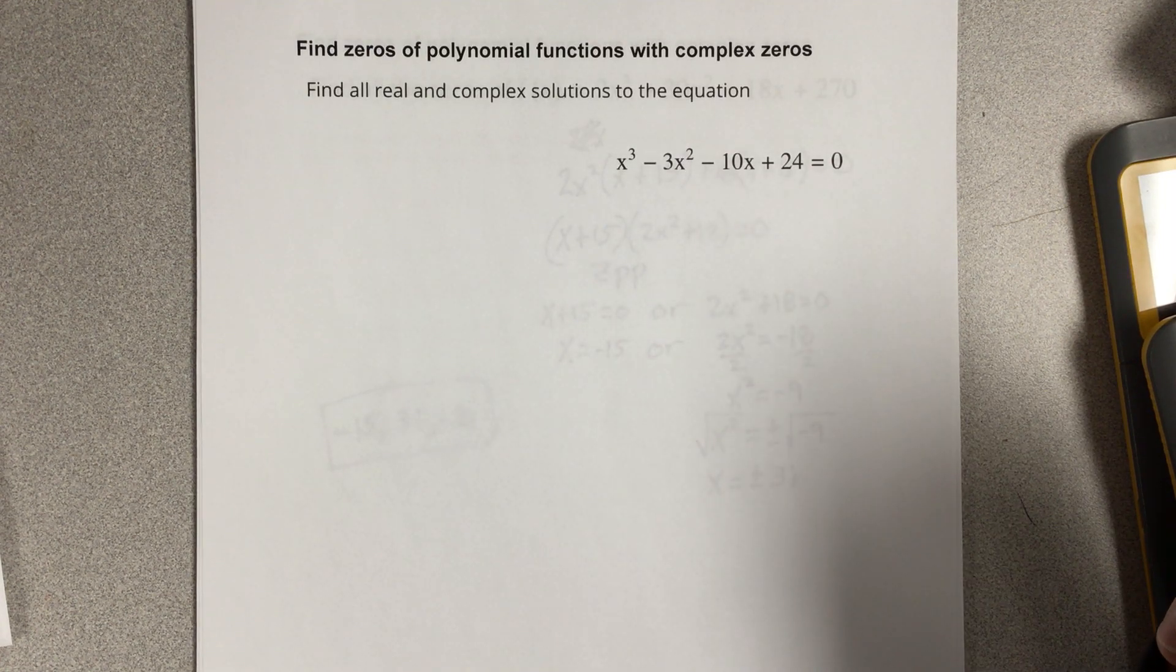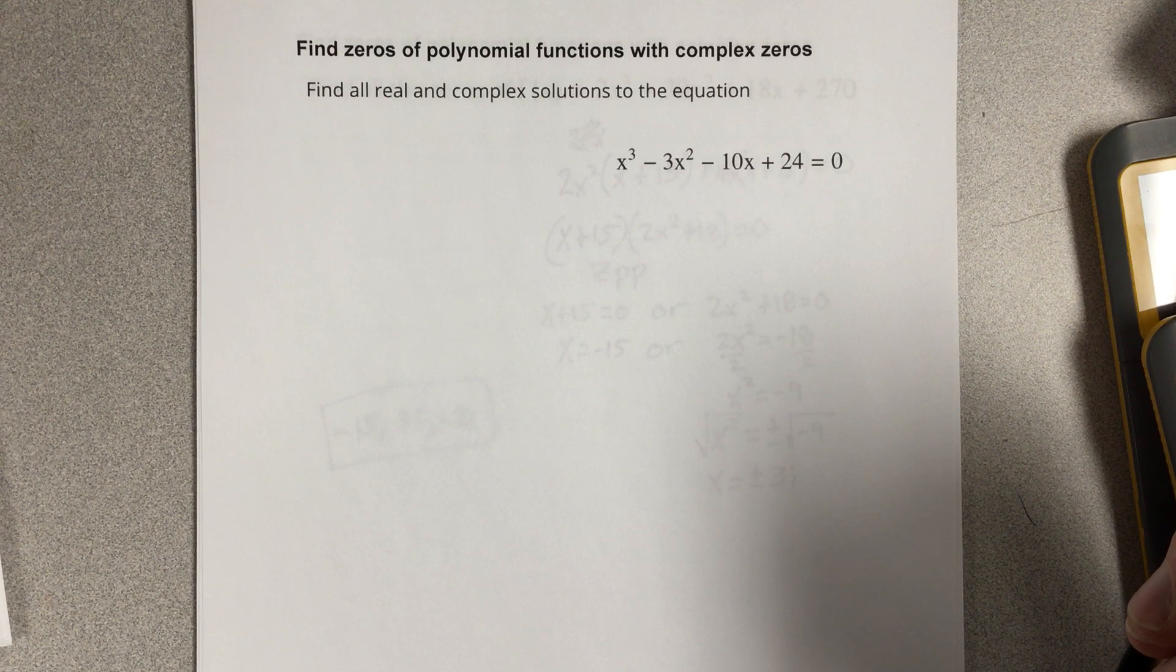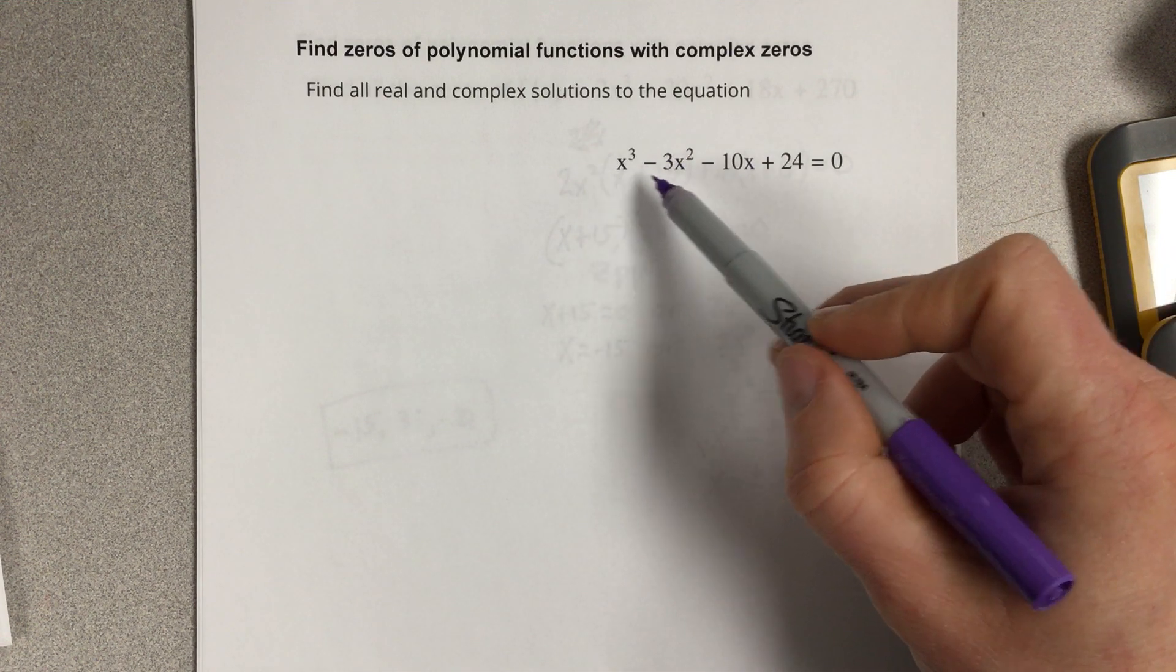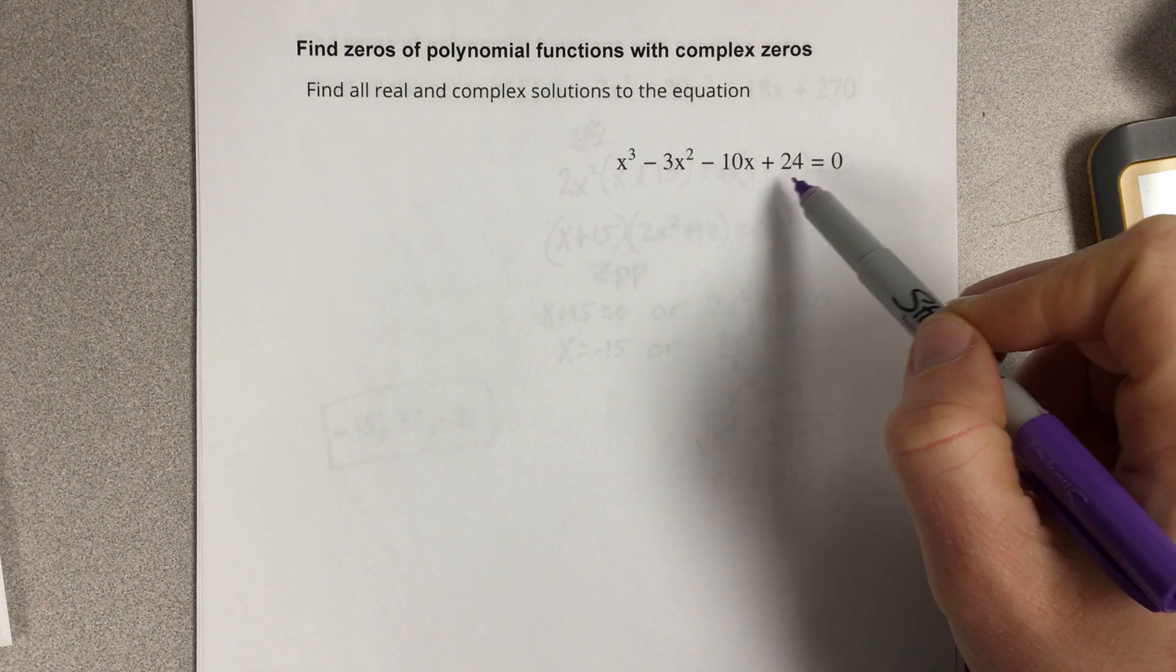In this video, we're going to find zeros of polynomial functions with complex zeros. It says find all real and complex solutions to the equation x³ - 3x² - 10x + 24 = 0.